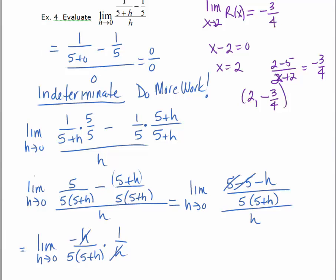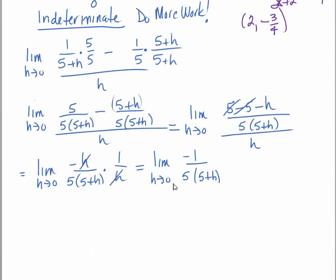leaving me with the limit as h approaches 0 of negative 1 over 5 times 5 plus h which equals negative 1 over 25. So the value of the original limit is negative 1 25th.